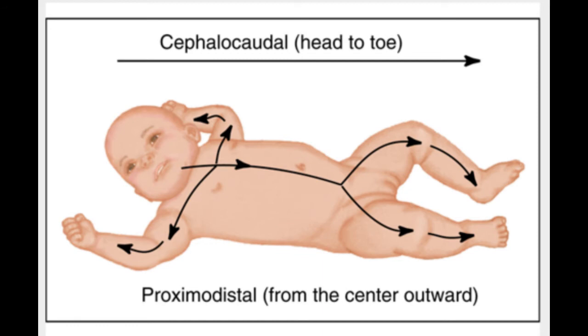There are lots of permutations of this principle. For example, in the womb, as an embryo, your hands, being closer to your head, develop earlier than your feet.